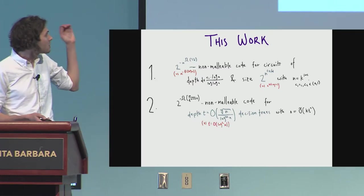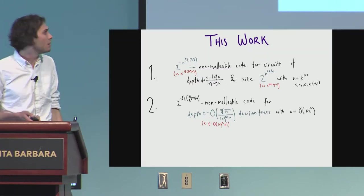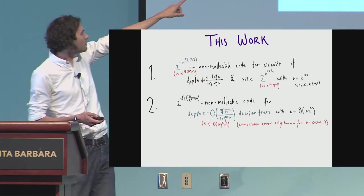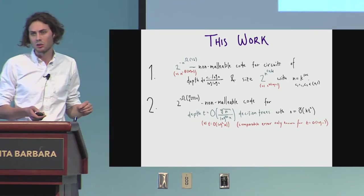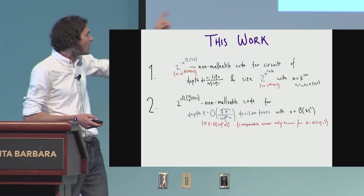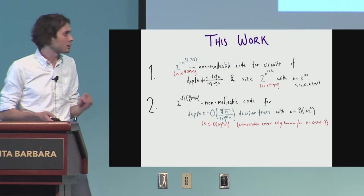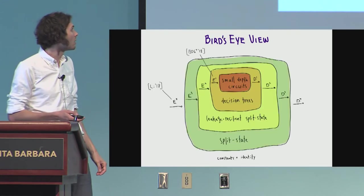And the best thing that was known before was depth log squared n, but that's actually from if you convert your decision tree to a DNF, then you get that. And the only thing with comparable error is this code that we were using before for local functions. It only works for depth of log n.